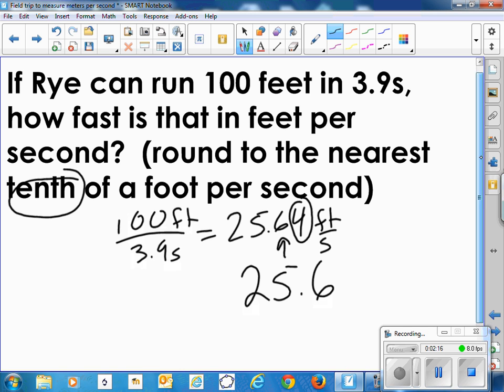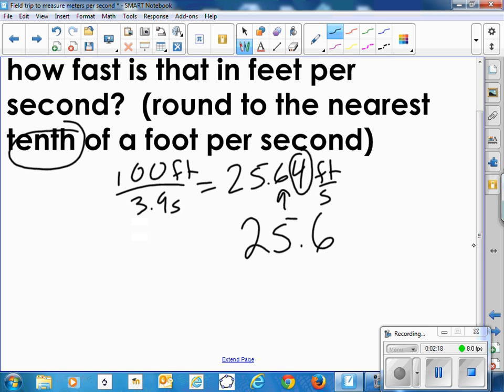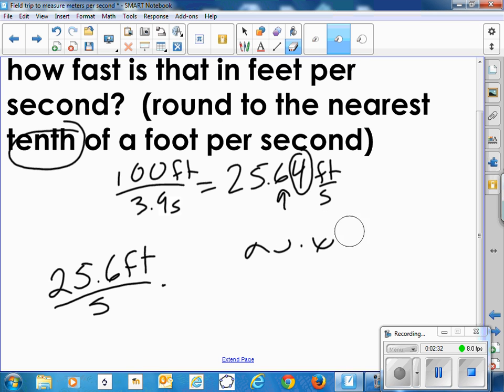Now, that's in feet per second. Can we convert that to miles per hour? So 25.6 feet per second. Well, I know there's 60 seconds in a minute. And I want this in miles per hour. So eventually I want to get it in units of hours. So I want the seconds to cancel.